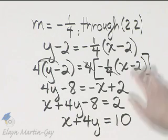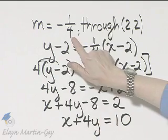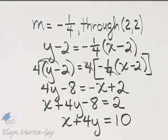Here is my equation. You can make sure it goes through 2, 2. Let x be 2 and y be 2, and see that a true statement results. You can also solve it for y to see if the coefficient of x is the slope negative 1 fourth. Here is my result.